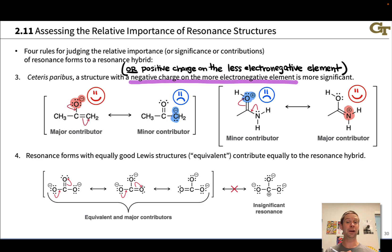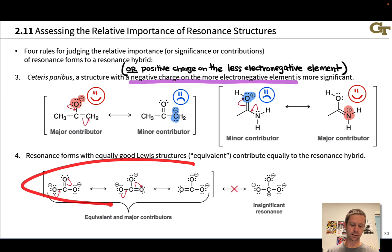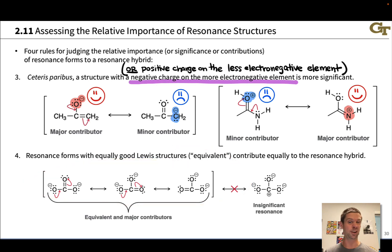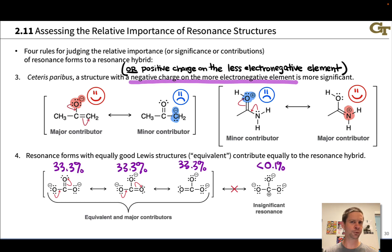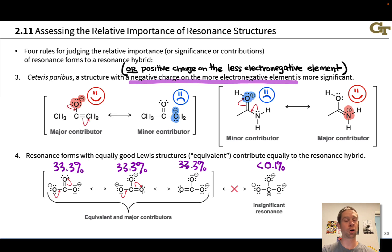Carbonate, shown here with three different significant resonance forms, is a classic example of this. It has the allylic lone pair structure built into it, so we can push electrons around and shift the negative charge. All three are equivalent resonance forms — the central carbon is trigonal planar, making these three structures perfectly superimposable. They are all equal contributors to the resonance hybrid, something like 33.3% each.